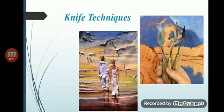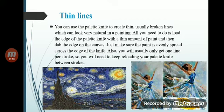Knife techniques. The first technique is thin lines. You can use the palette knife to create thin, usually broken lines, which can look very natural in a painting. All you need to do is load the edge of the palette knife with a thin amount of paint and then dab the edge on the canvas. Just make sure the paint is evenly spread across the edge of the knife.